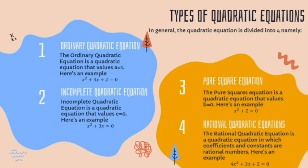Next, types of quadratic equations. In general, the quadratic equation is divided into four types. First, the ordinary quadratic equation. The ordinary quadratic equation is a quadratic equation where the value of a equals 1. Here is an example: x² + 3x + 2 = 0.